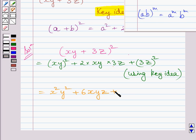This plus sign is as it is. Now again, applying this law of exponents, we can write square of 3z as 3 square multiplied by z square.